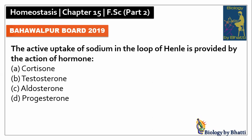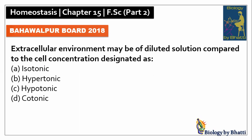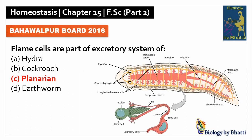Bahawalpur Board 2019: the active uptake of sodium in the loop of Henle is provided by the action of hormone aldosterone, so the answer was C option. Bahawalpur Board 2018: the excretory structure present in cockroach is Malpighian tubules, the answer is B option. In the same paper, if the extracellular environment is a diluted solution compared to cell concentration, the surrounding solution is hypotonic, the answer is C option. Bahawalpur Board 2016: flame cells are part of the excretory system of planaria, C option.